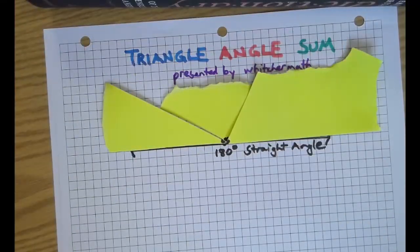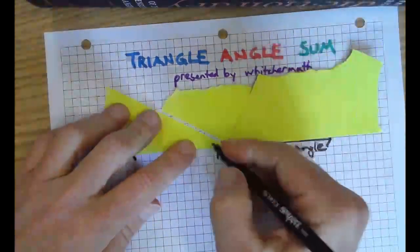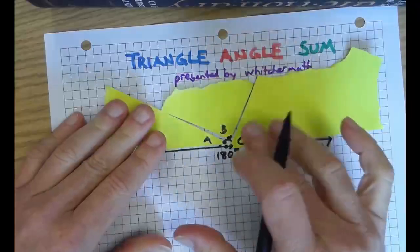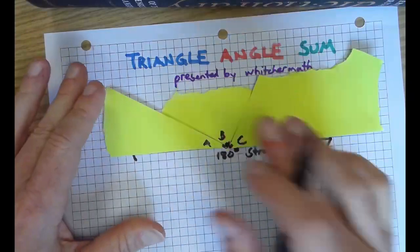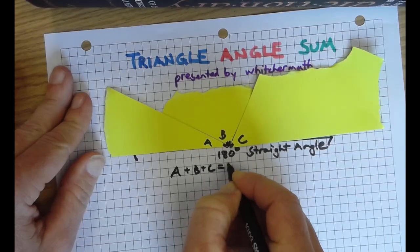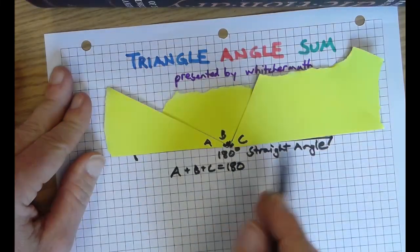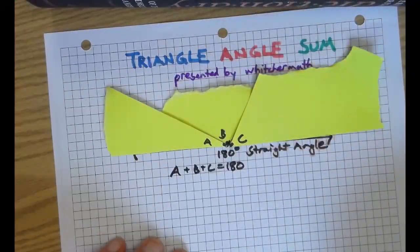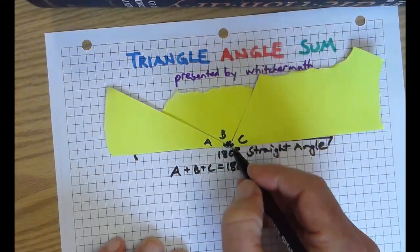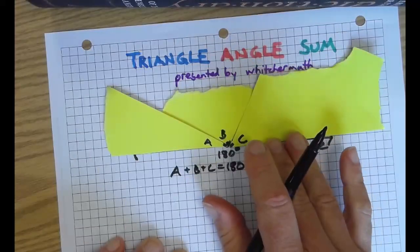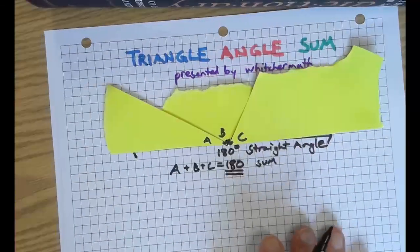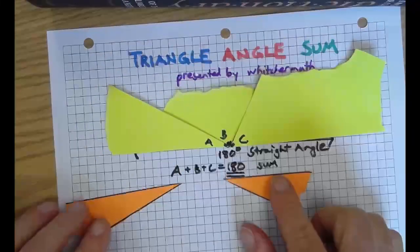Boom. Triangle angle sum. Which means if we call this angle A, angle B, angle C, we can say this about every possible triangle you could imagine: A plus B plus C equals 180. It's like having at this point three supplementary and adjacent angles. They're adjacent because they share a side and a vertex, and they're supplementary because they add up to 180. They have a sum of 180.